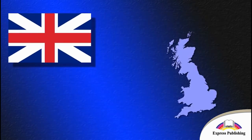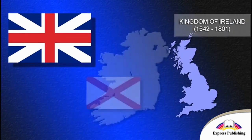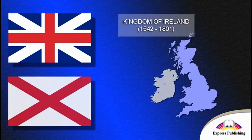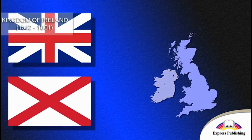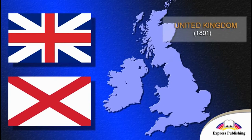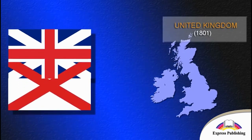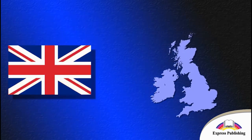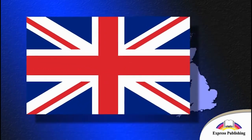The flag of Ireland, the St Patrick's Cross, is a red diagonal cross on a white background. It is in the red diagonal stripes on the Union Jack.